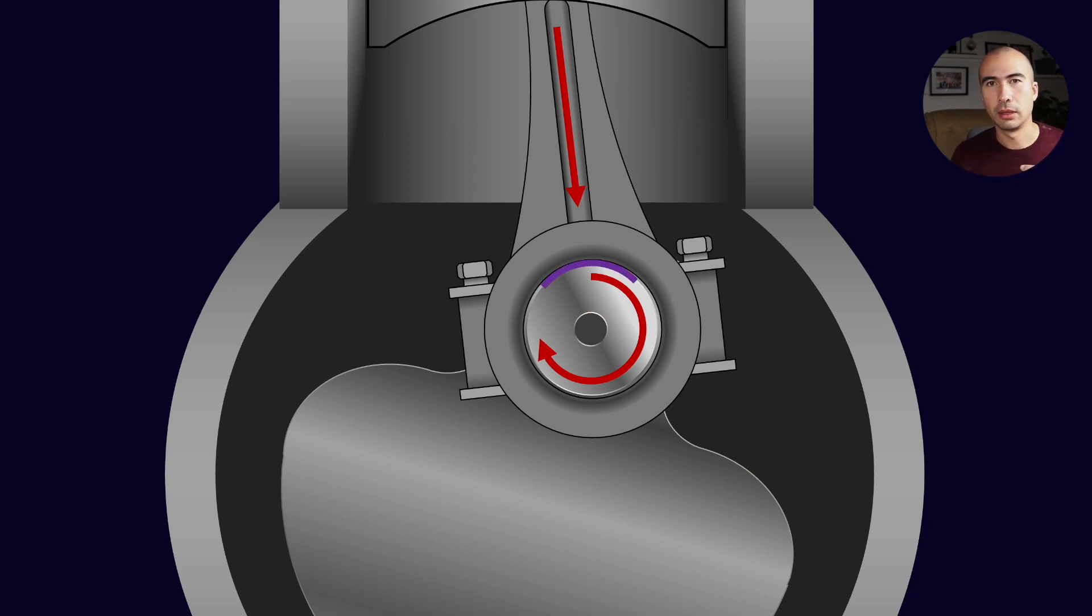So all the pressure on the bearing shell is going to be on the upper half of the bearing shell—that's where all of that compressive force is going to be. The conrod is pushing down on the bearing shell and then obviously the journal is pushing up against that.